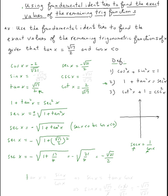Tangent is sine over cosine, which means sine of x equals tangent times cosine. Multiplying both sides by cosine: sine equals square root of seventeen over two times negative two over square root of twenty-one. The twos cancel, giving sine of x equals negative square root of seventeen over square root of twenty-one.